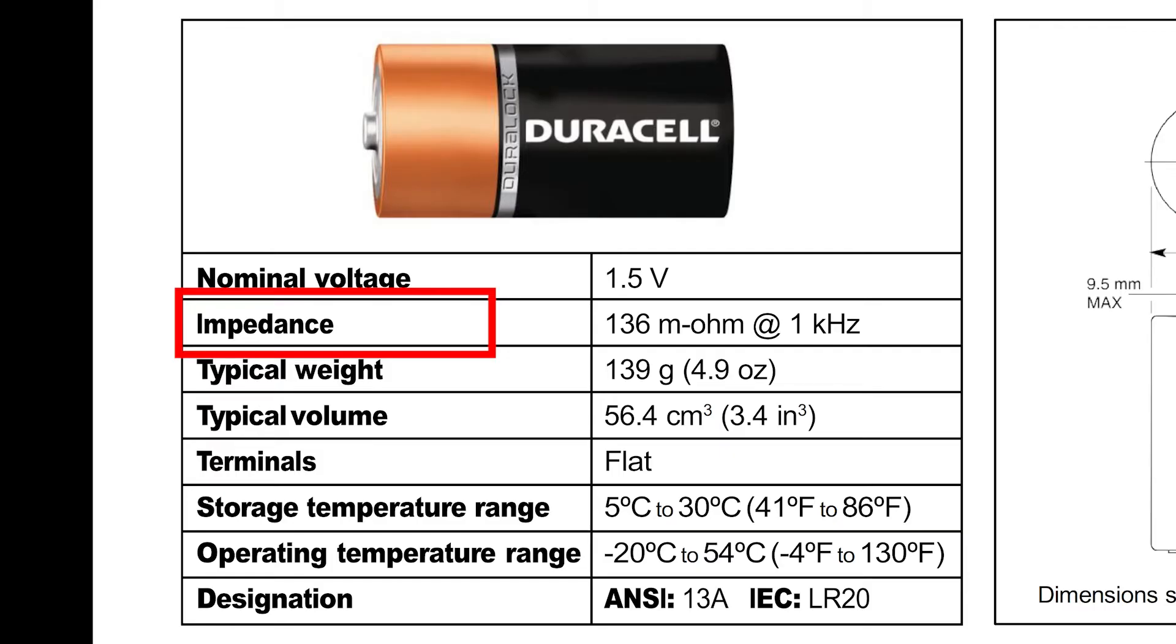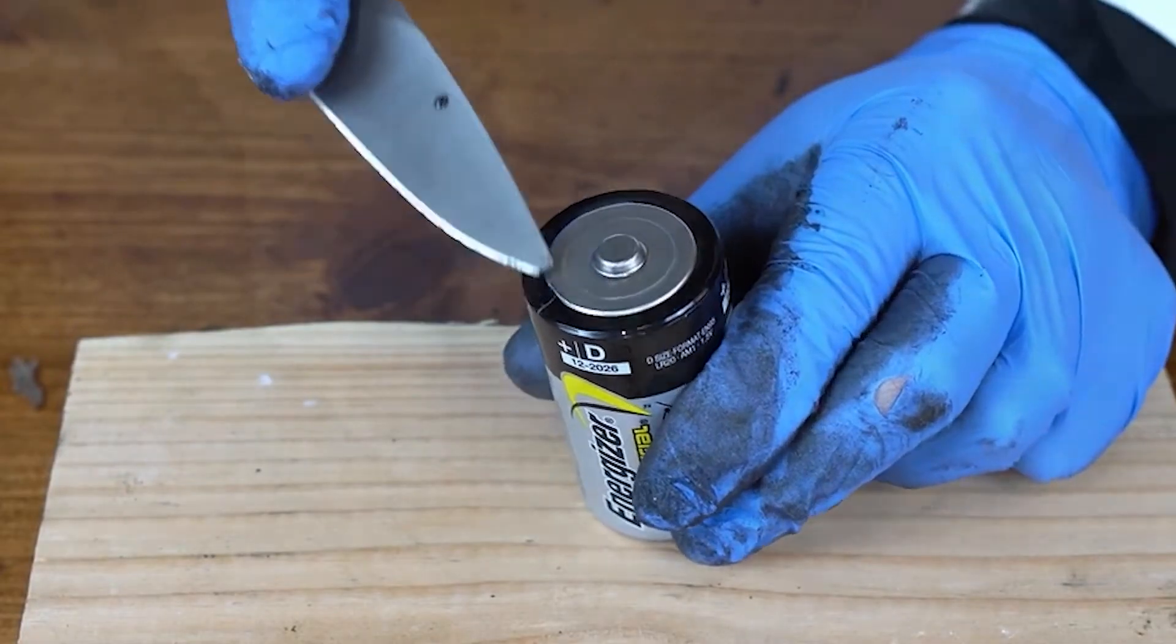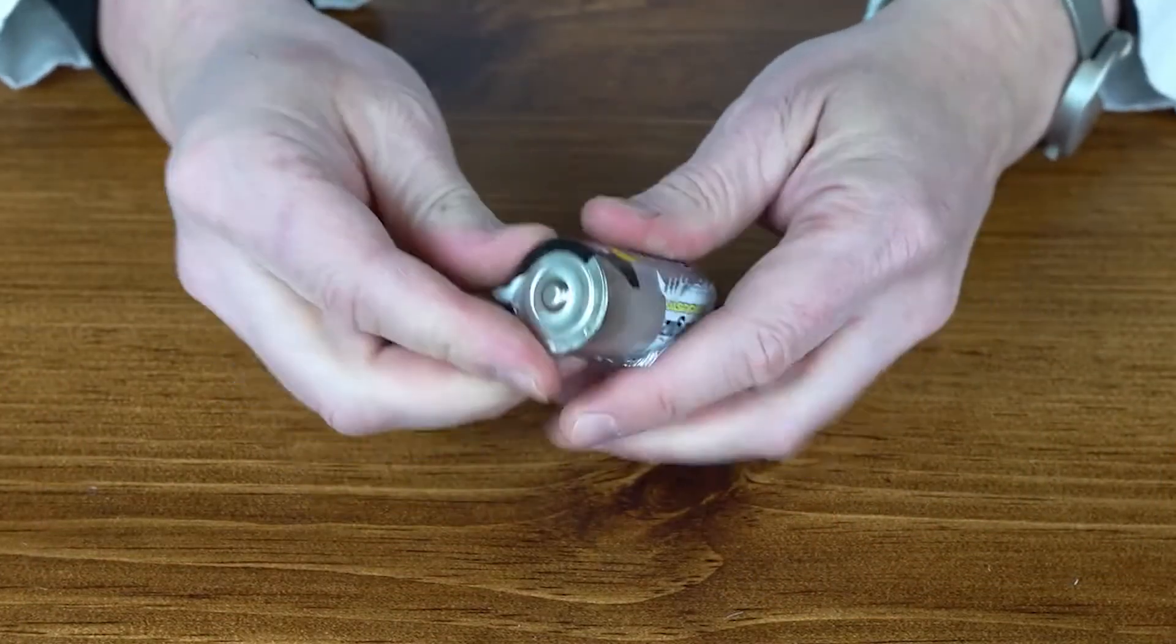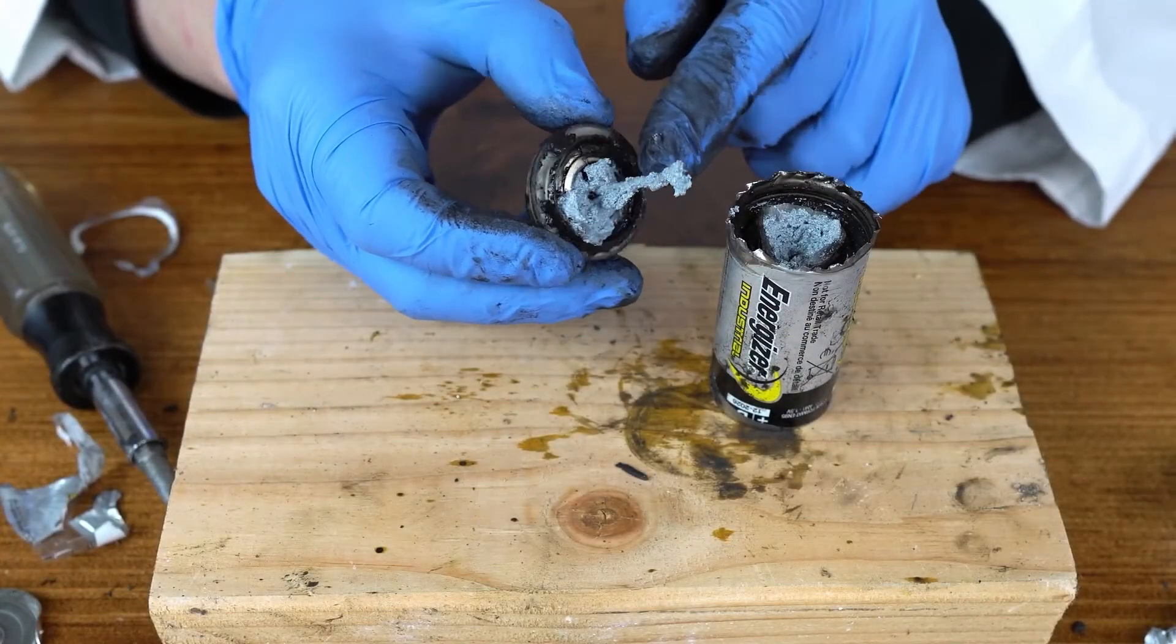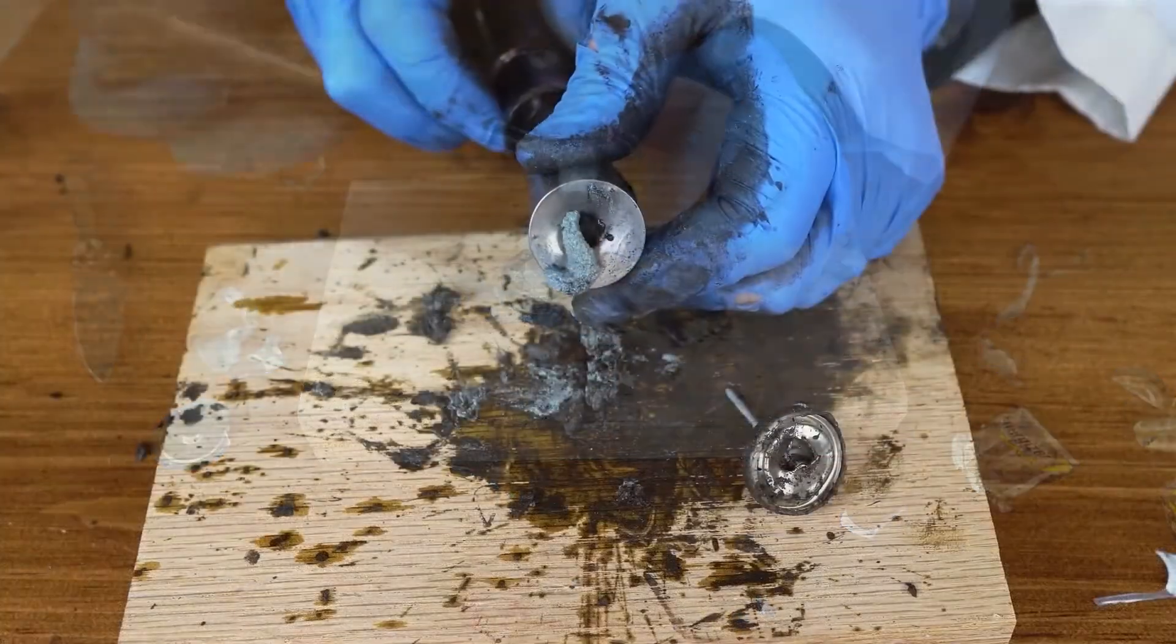The impedance of this battery is listed as 136 milliohms, which means 0.136 ohms. What this means is that inside the battery in series with the actual voltage source is 136 milliohms of resistance. This resistance comes from the physical construction of the battery: the thin sheet metal can that forms the negative electrode, the carbon rod that forms the positive electrode, and the electrolyte itself.